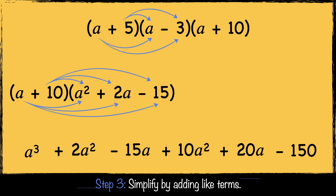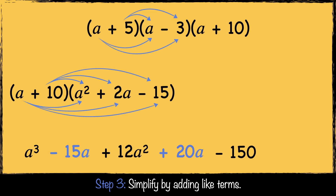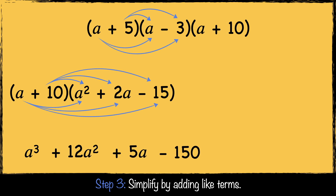Now we're on to step three, where we simplify by combining like terms. 2a squared and 10a squared combine to make 12a squared. Minus 15a and 20a combine to make 5a. Now we have expanded all three brackets to get a cubed plus 12a squared plus 5a minus 150.